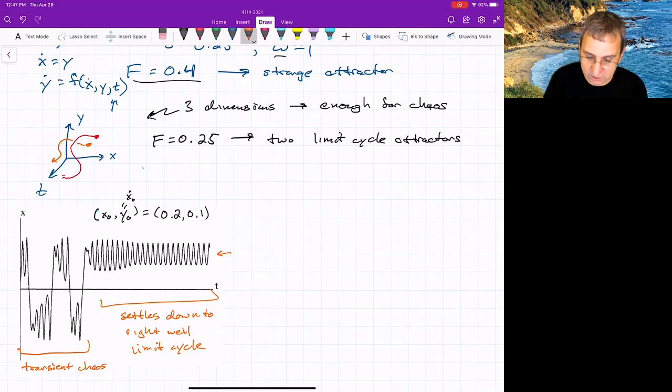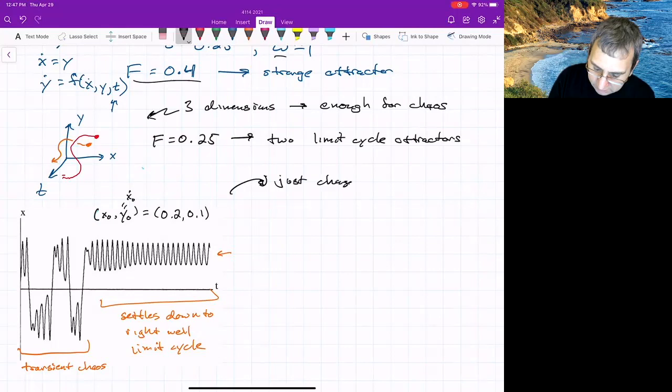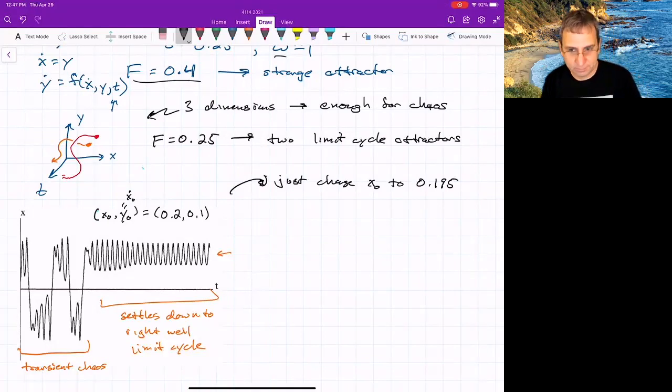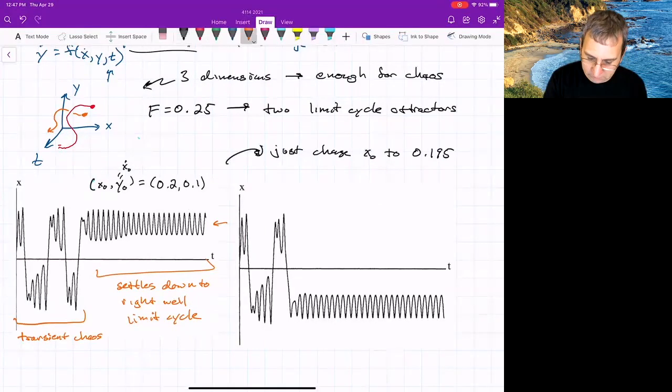If you just nudge this initial condition slightly, so just change X naught to 0.195, a very small percentage, the picture will look different. So you still have transient chaos, but you notice what's going on. This is settling down into the left well.